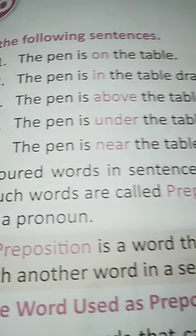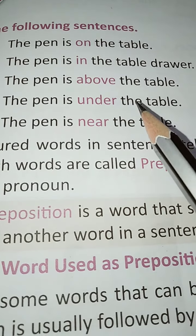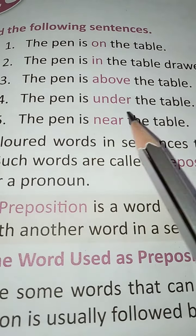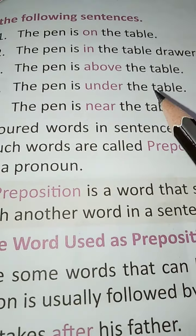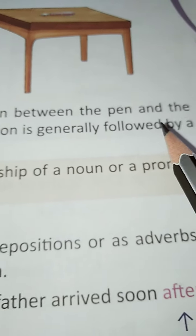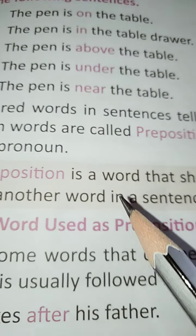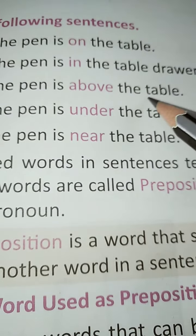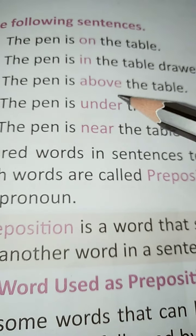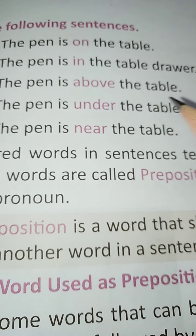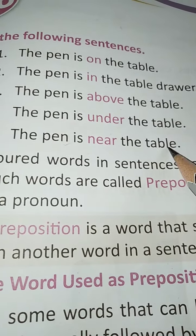Now read the following sentences. The pen is on the table. The pen is in the table drawer. The pen is above the table. The pen is under the table. The pen is near the table. The colored words in these sentences tell us the relationship between the pen and the table. Such words are called prepositions. A preposition is generally followed by a noun or a pronoun. In these sentences, on, in, above, under, near — they are prepositions, and they show the relation between the pen and the table.